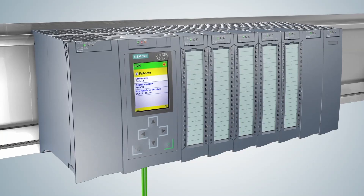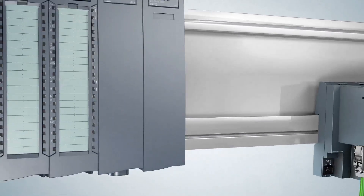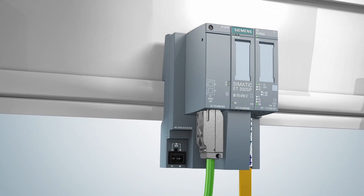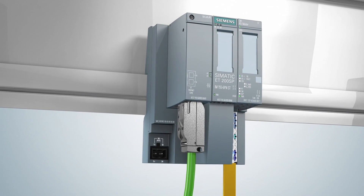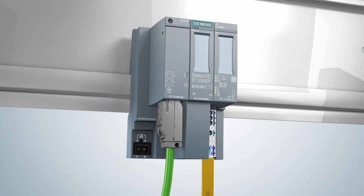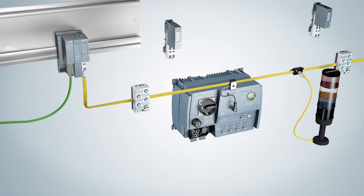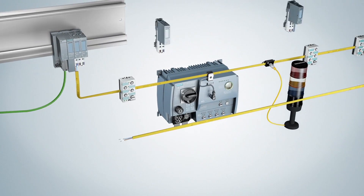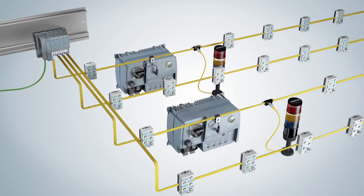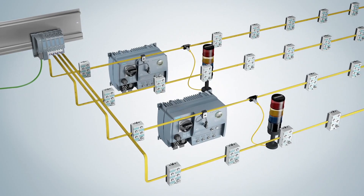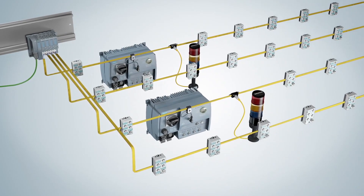Only the two-wire ASI cable is led to the switching cabinet, which is connected to the controller via the ASI master. With the ASI master module in the distributed peripheral system Simatic ET200SP, Siemens offers a modular, high-performance solution that reads more than 200 input signals to the PLC, which can control or trigger as many outputs also via a thumb-width module.